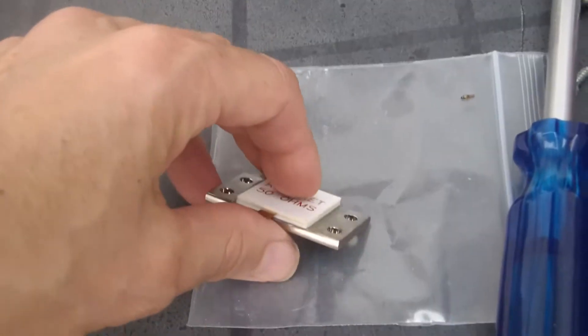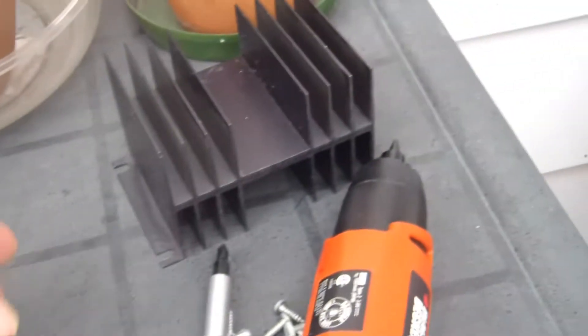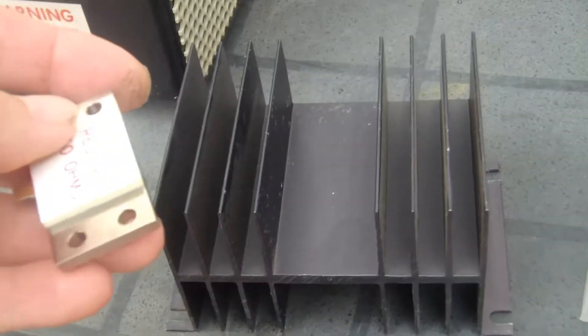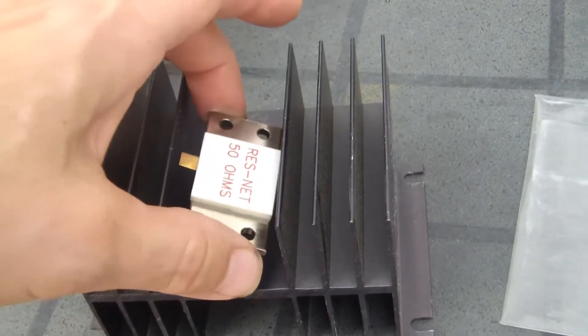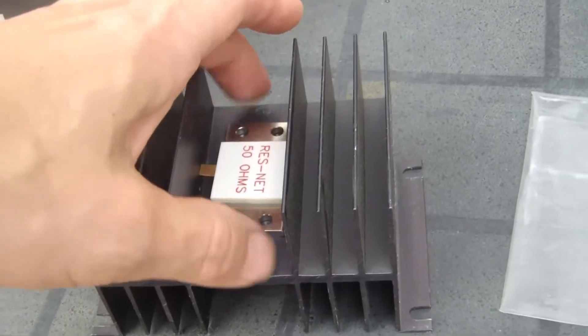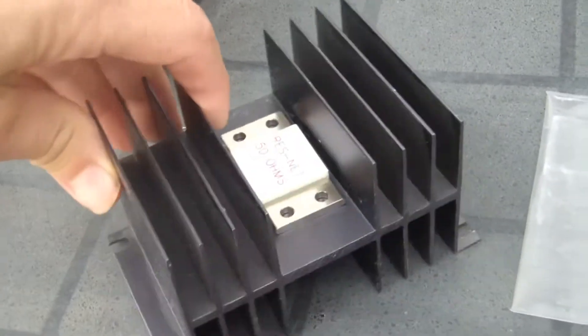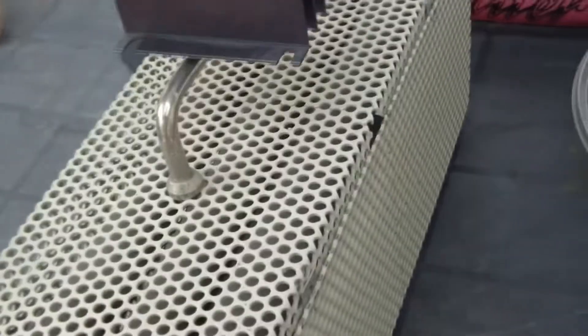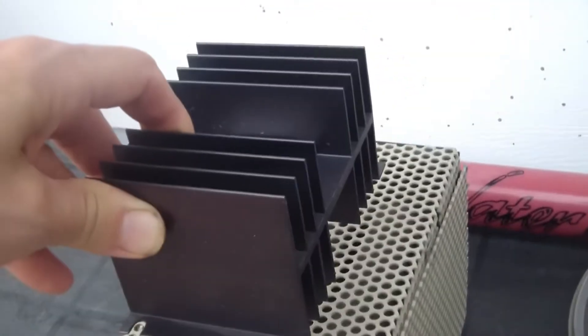So the idea then is to—here's that heat sink I picked up as well too. This is not going to be good enough but here's the idea: to get something maybe almost three times the size of this and then use this as a housing.